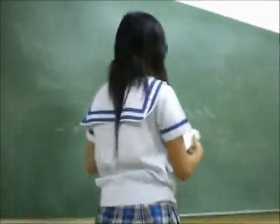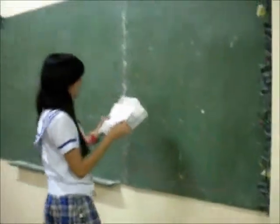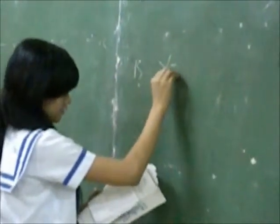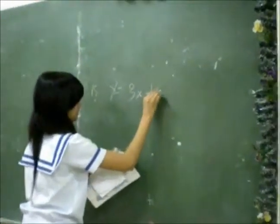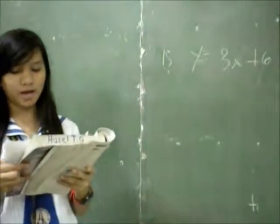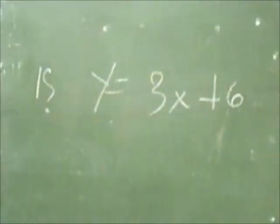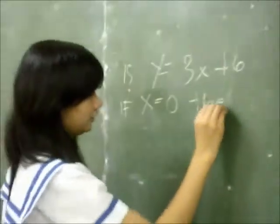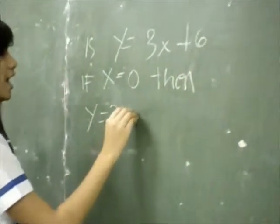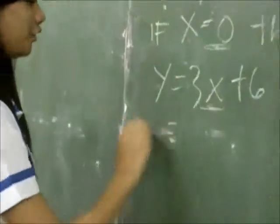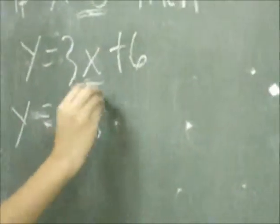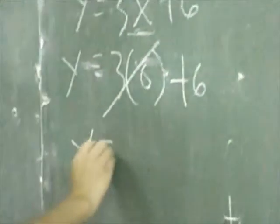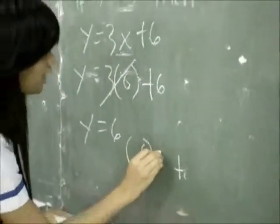For example, consider the line with equation y equals 3x plus 6. Two points are needed to define this function; we can take the x and y intercepts. If x equals 0, then substituting into y equals 3x plus 6, we get y equals 6. So we have the point (0, 6).